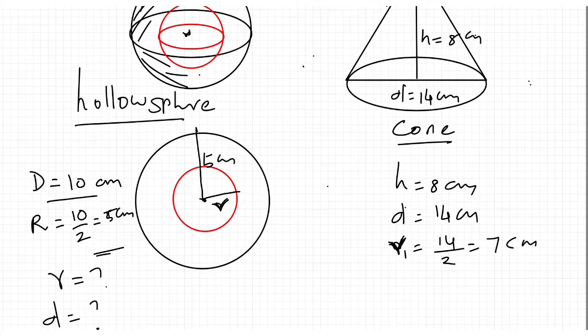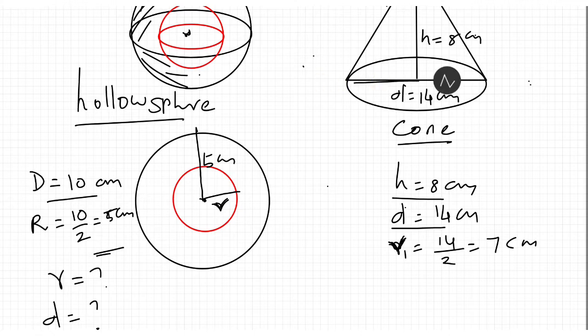The cone's dimensions: height is 8 cm, diameter is 14 cm, that is base diameter of 14 cm. Base radius: 14 by 2, that is 7 cm. This is r1.